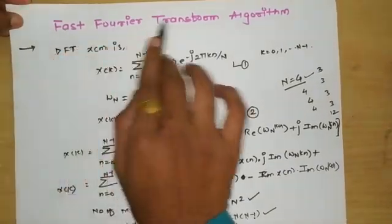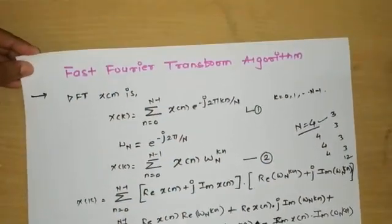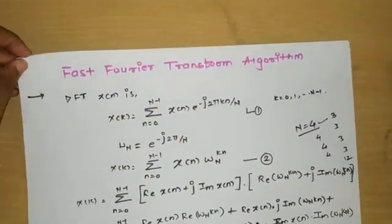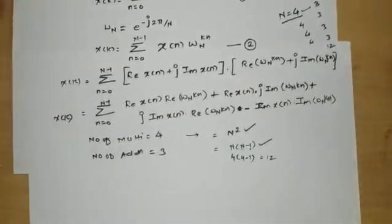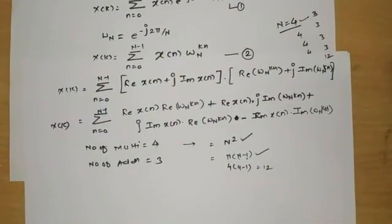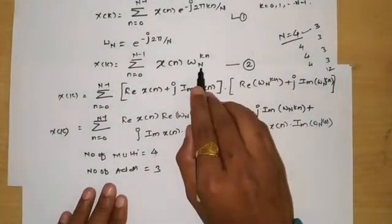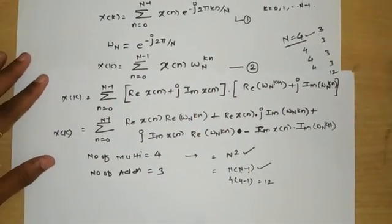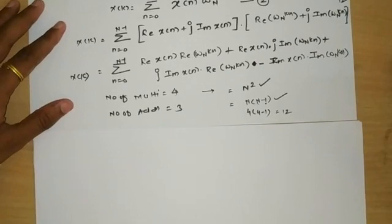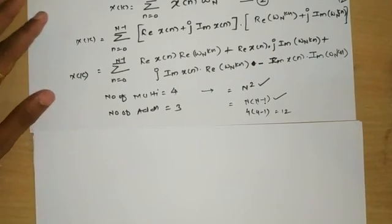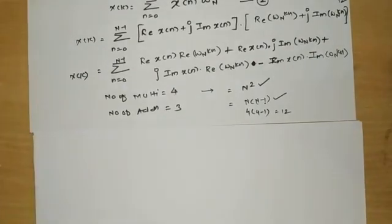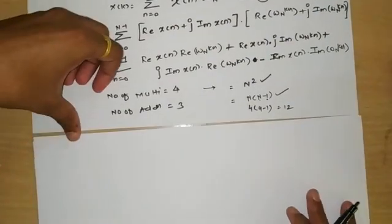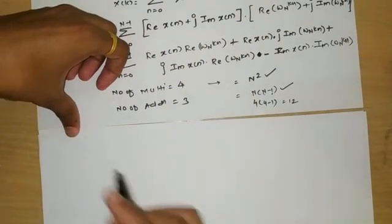In direct computation we do not use any properties of the twiddle factor, but in FFT we utilize two properties of the twiddle factor. The first property is called the symmetry property, and the second property is called the periodicity property.